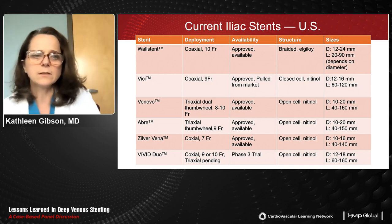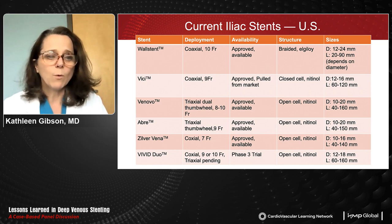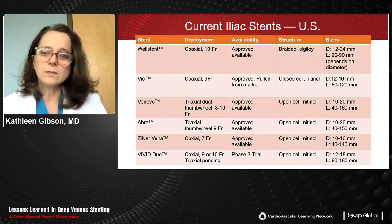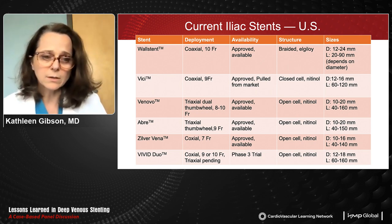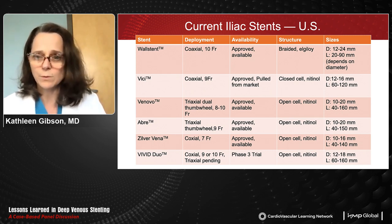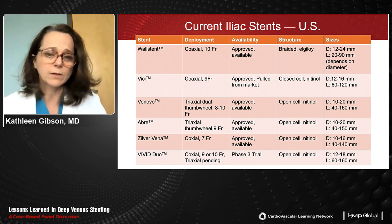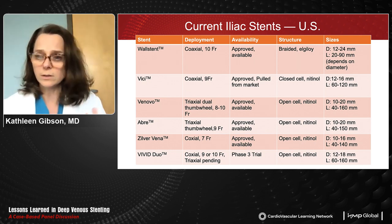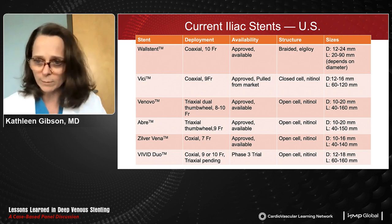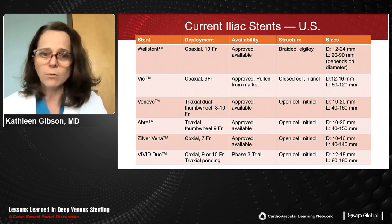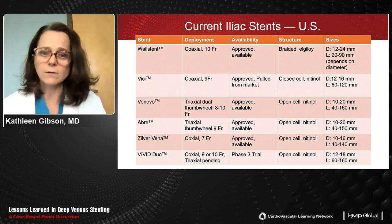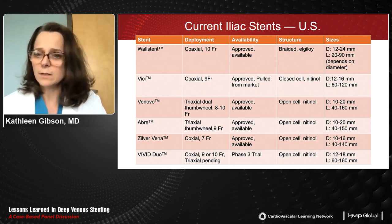The current stents in the United States: the Wall Stent, Venovo, Abre, and Zilvervena are all FDA-approved available stents. The Vici was FDA-approved but recently removed from the market, and the Vivid Duo is in phase three clinical trials and not yet FDA-approved. These stents have different properties. The Wall Stent has coaxial deployment, as do the Vici, Zilvervena, and Vivid Duo. It is a braided Elgiloy stent with a wide range of diameters and lengths from 20 to 90 millimeters.